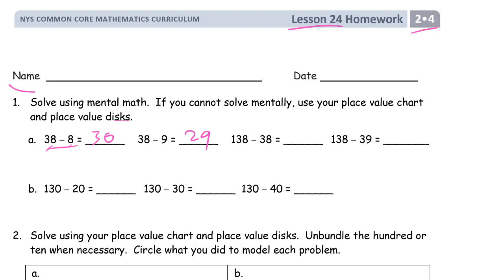Now we have 138 minus 38. I'm taking away the 38 and should still have the 100 left. Then 138 minus 39 — I'm taking away one more than 38 from 138, so I should have one less left: 99. This next one looks even easier — we're taking away 20 from 30, but we also have 100, so it's not just 10 left, it's 110.